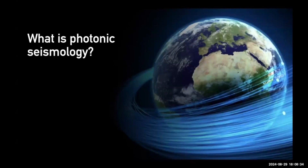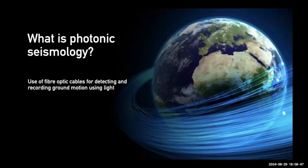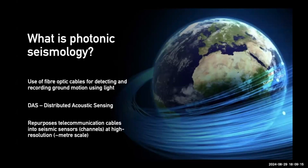I think the way forward is photonic seismology. Photonic seismology is the use of fiber optic cables — our telecom cables that we use to get our internet — but using these to actually record ground motion using light. The light traveling down a fiber optic cable can be used to record ground motion and seismic waves. The most popular instrument we can use is called Distributed Acoustic Sensing, or DAS, which repurposes telecommunication cables into seismic sensors that have very high resolution. The cables are running everywhere, and the imperfections within the fiber optic cable itself can scatter the light back so each imperfection can be used as an individual sensor.